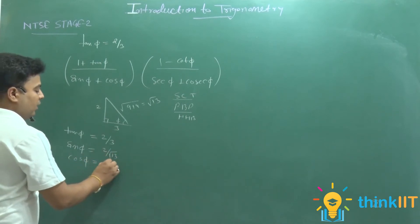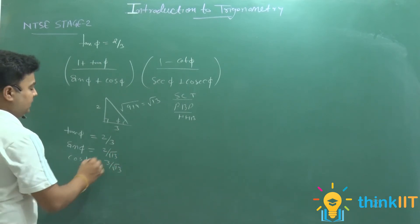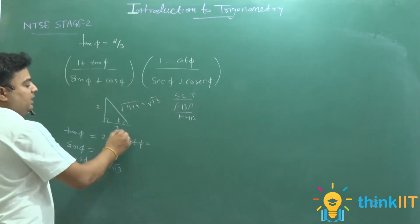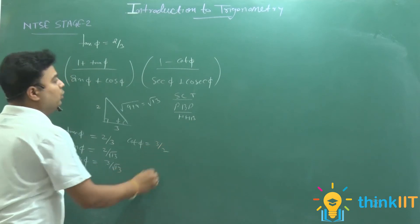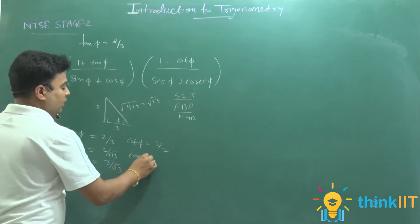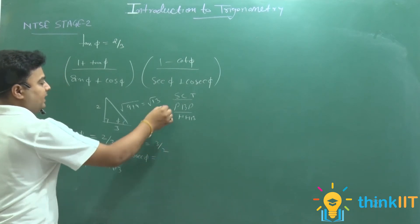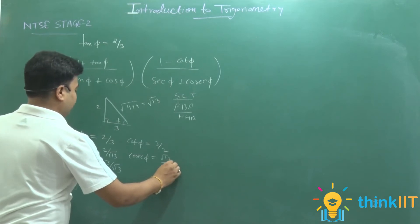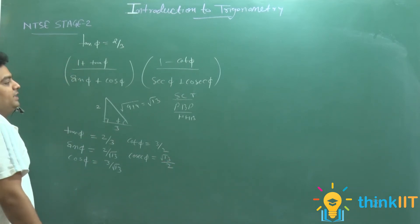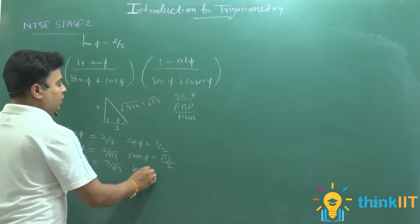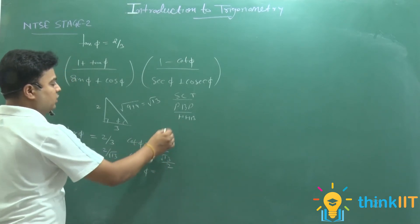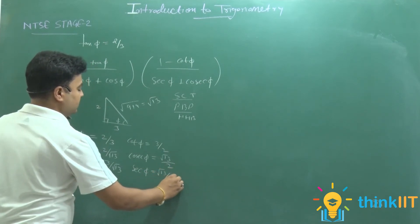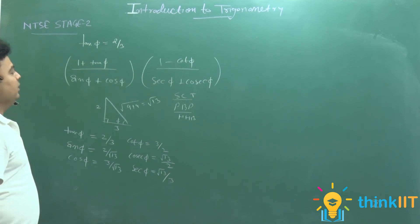Next, cot θ = B/P = base/perpendicular = 3/2। Next, cosec θ = H/P = √13/2। Next, sec θ = H/B = √13/3। यह सारी values मैंने निकाल लीं और अब इन्हें expression में put करेंगे।